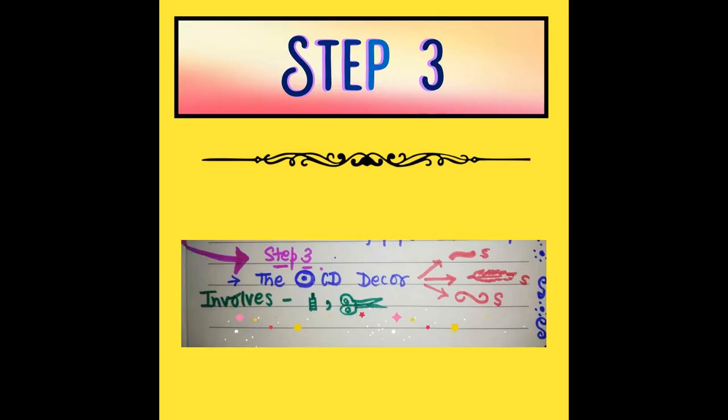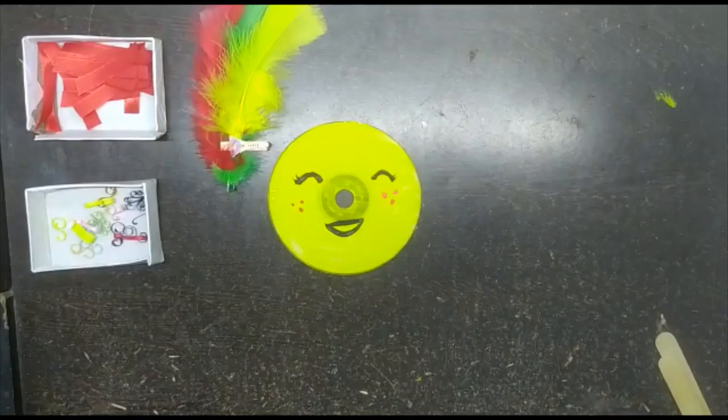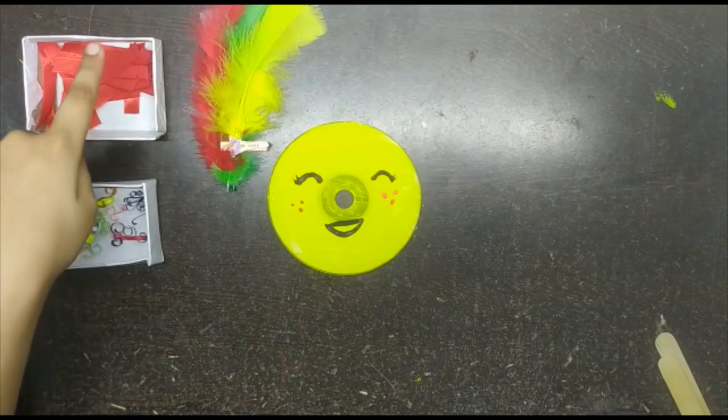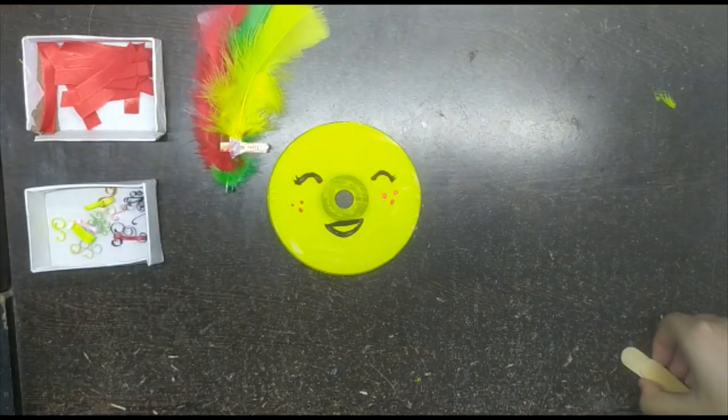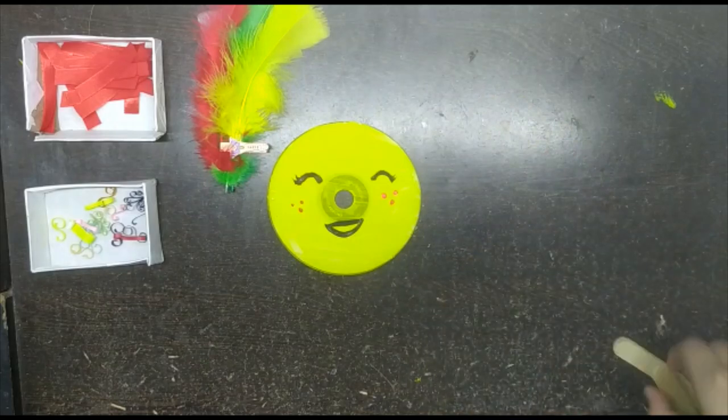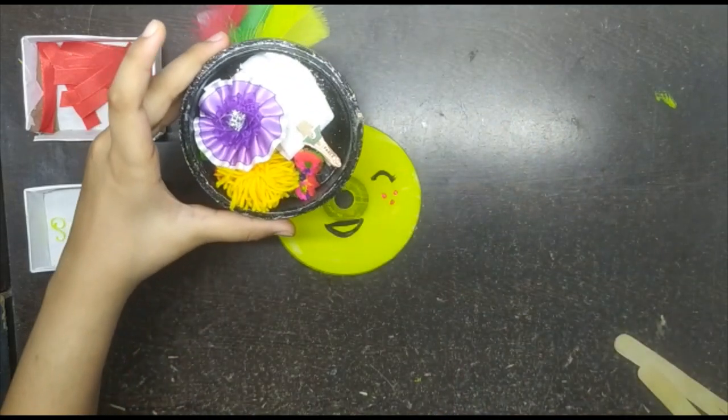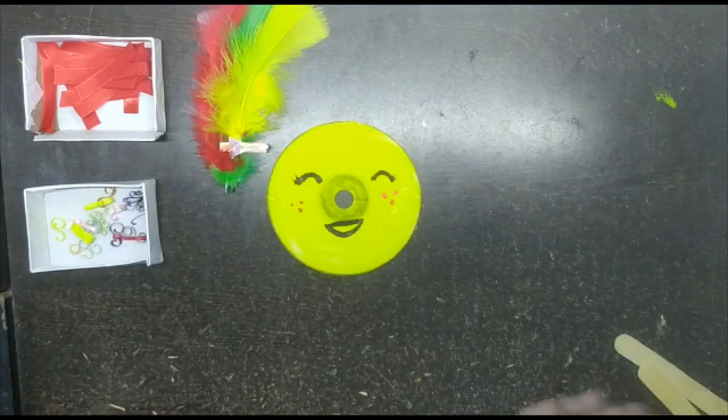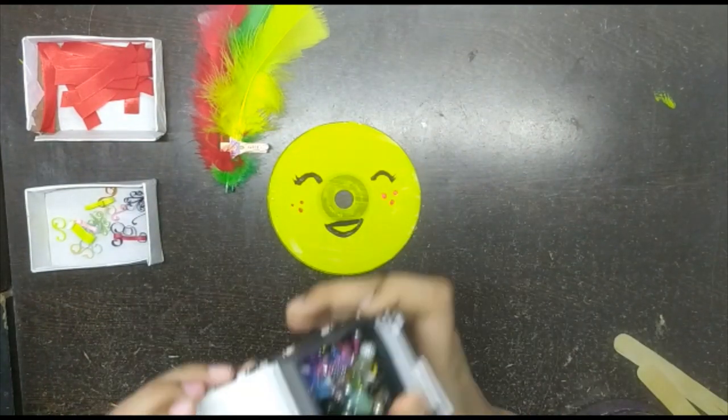Step 3 involves CD decor, fevicol, and scissors. For decorating our CD we will need some scrolls, some ribbon strips and some feathers. You can use some ice cream sticks, some woolen balls, flour and tissue paper. You can also use some stones.